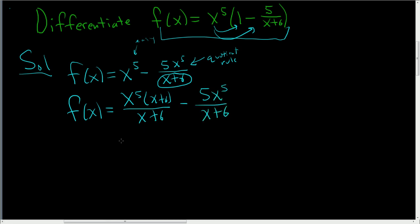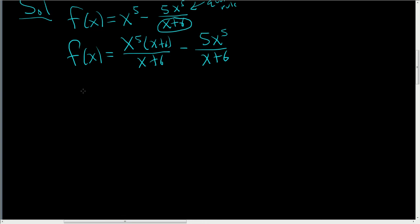So we're almost there. We almost have a single quotient, so this is going to be f of x equals, let's see here, x to the fifth times x is x to the sixth, plus x to the fifth times 6 is 6x to the fifth. And then here we just have the minus 5x to the fifth. And all of this is being divided by x plus 6.